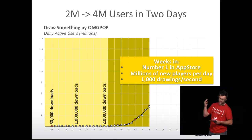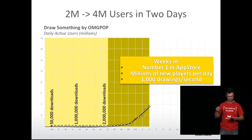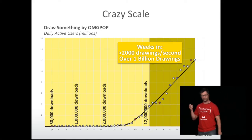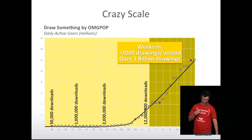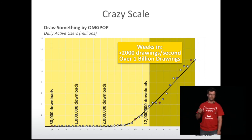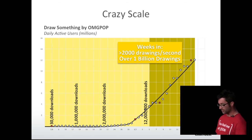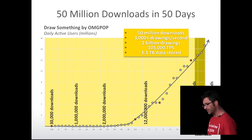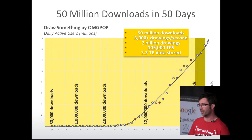They scaled from six nodes to 18 nodes to 54 nodes on the database, and they were seeing 1,000 drawings a second going into the database. After a little over a month, they had one billion drawings inside the database, still going up and still working properly.